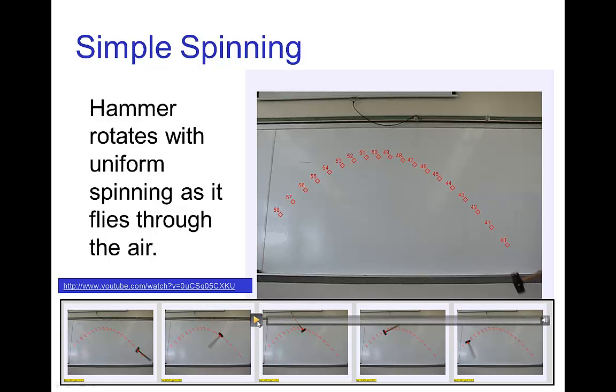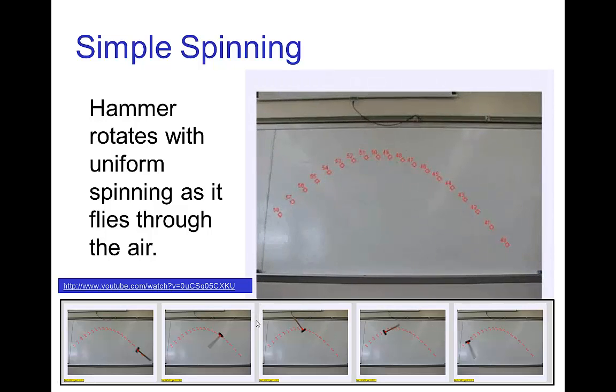Here's another example for a hammer being thrown in the air, and you see that the hammer is following a parabolic arc through its center of gravity. So the center of gravity tends to be near the head of the hammer because the head is very heavy.